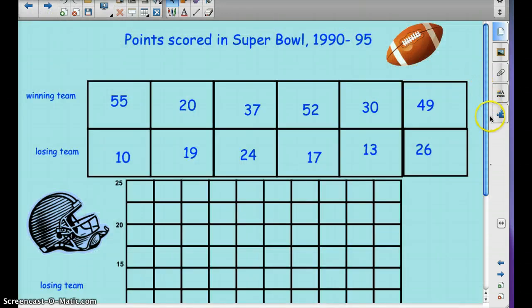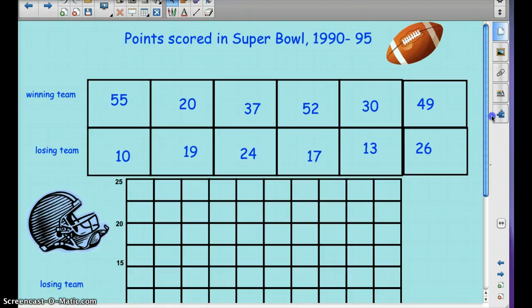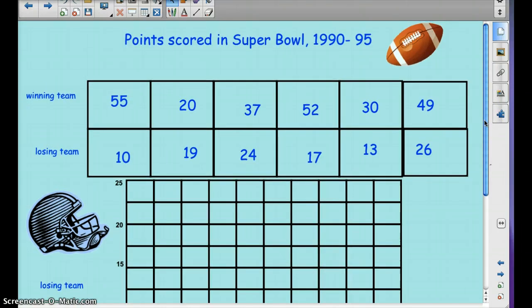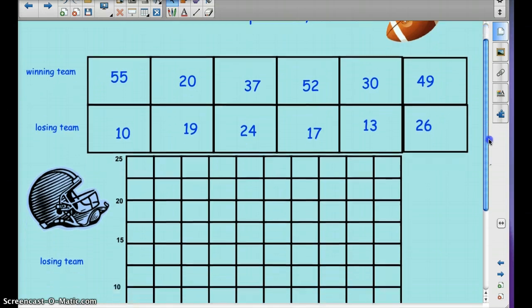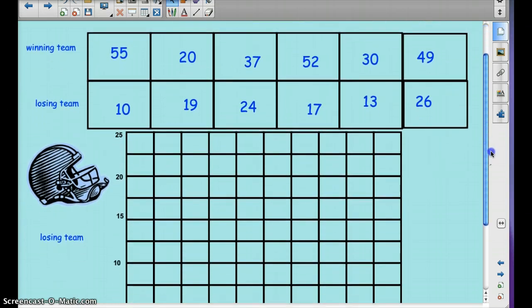Here is our next example. We can do this one together. Points scored in a Super Bowl between 1990 through 95. I was five, between the ages when I was five and ten. So, winning team and losing team scores. We're going to go ahead and plot these together.